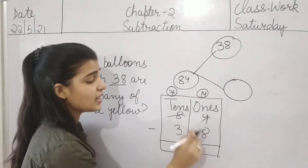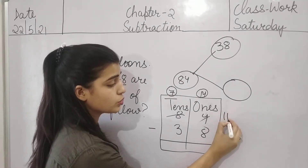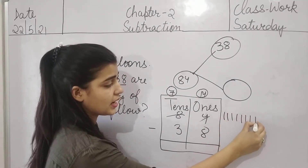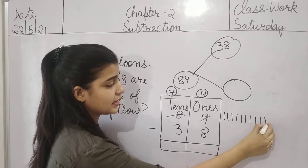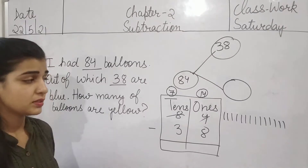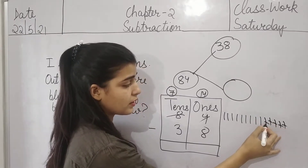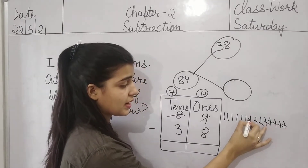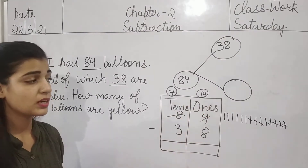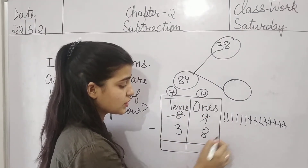So 14 minus 8 is what? Make 14 ones — counting 1 through 14. Subtract 8 ones — counting 1 through 8. After the subtraction of 8 ones from 14 ones, how many ones are left? Only 6 ones are left. Now come to the tens column: 7 minus 3. Count 7 tens, subtract 3.